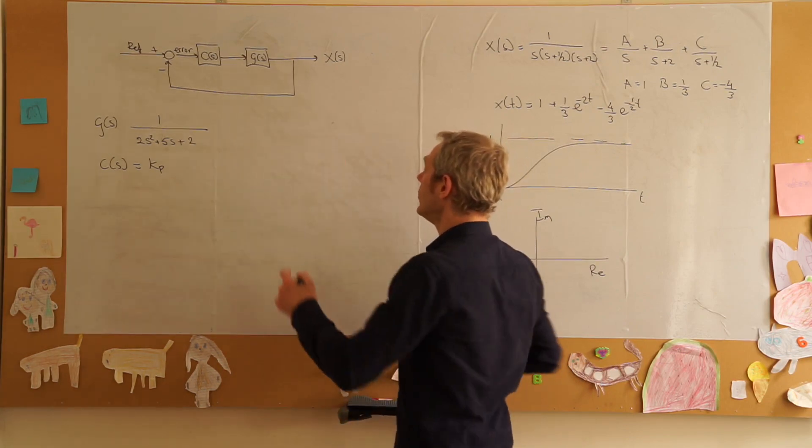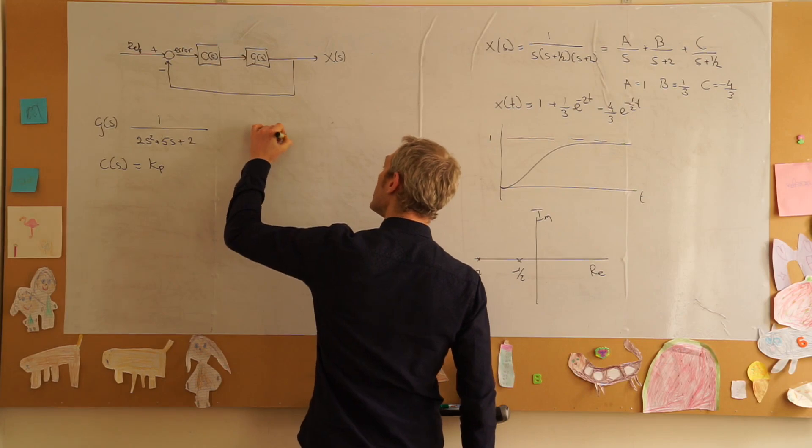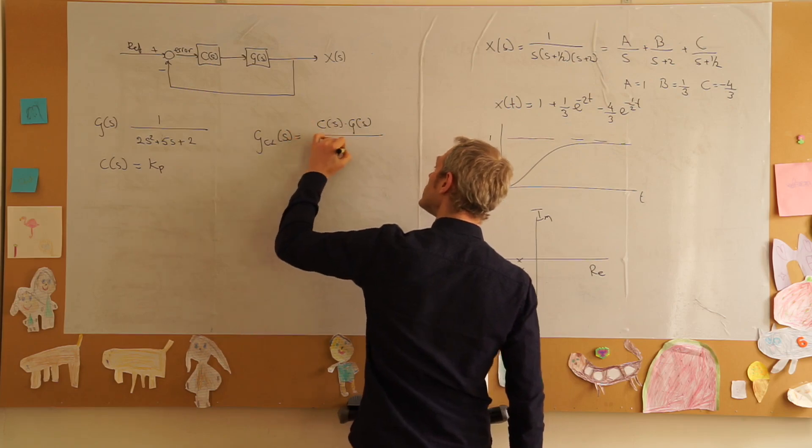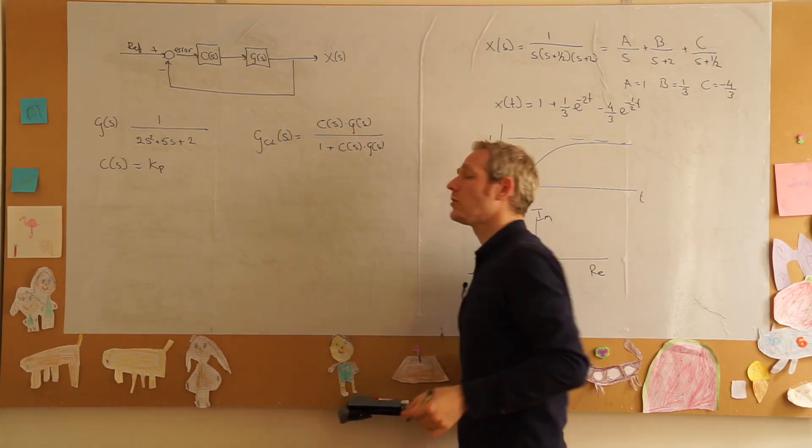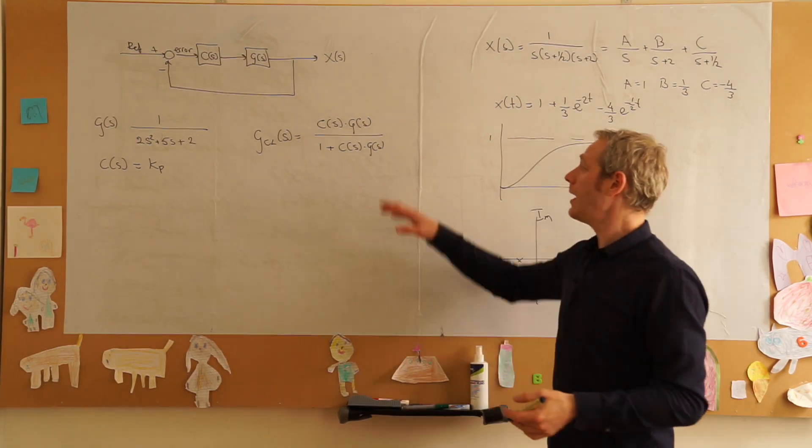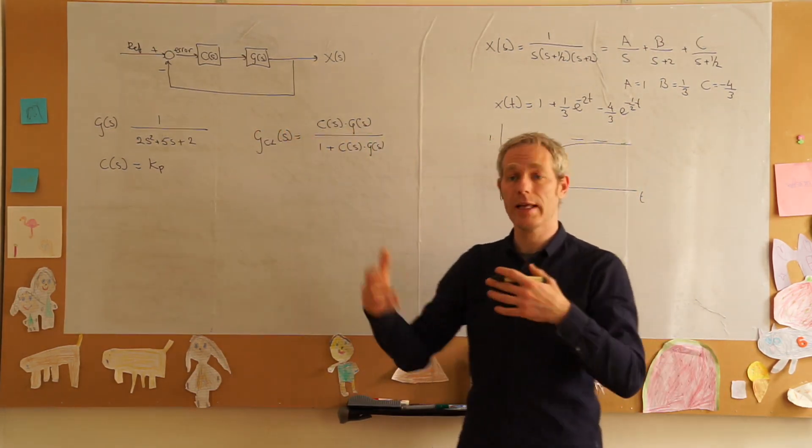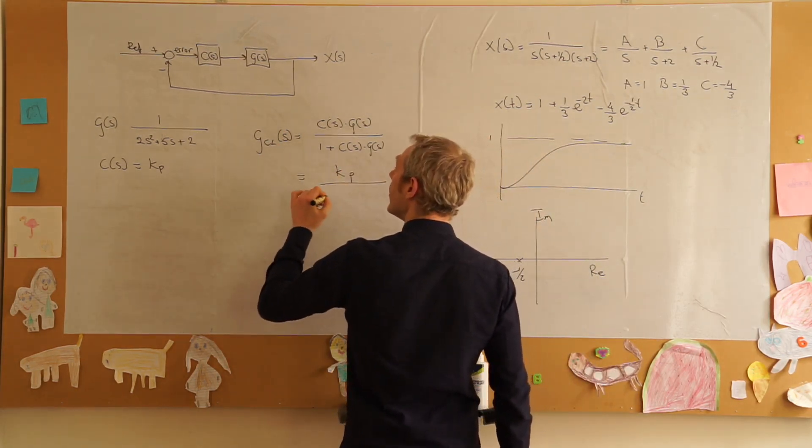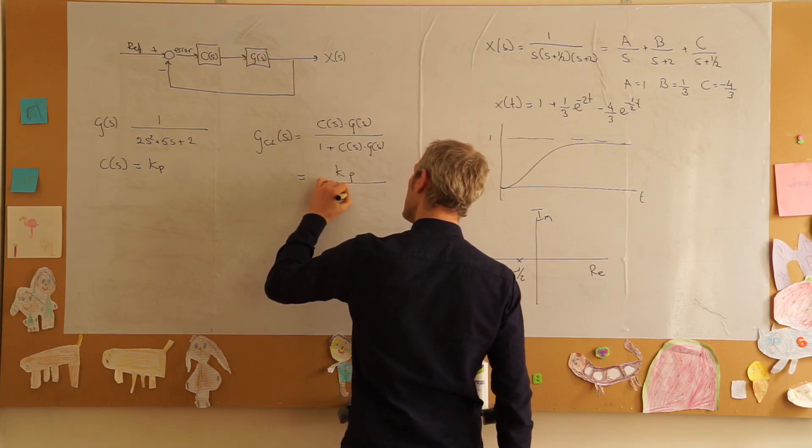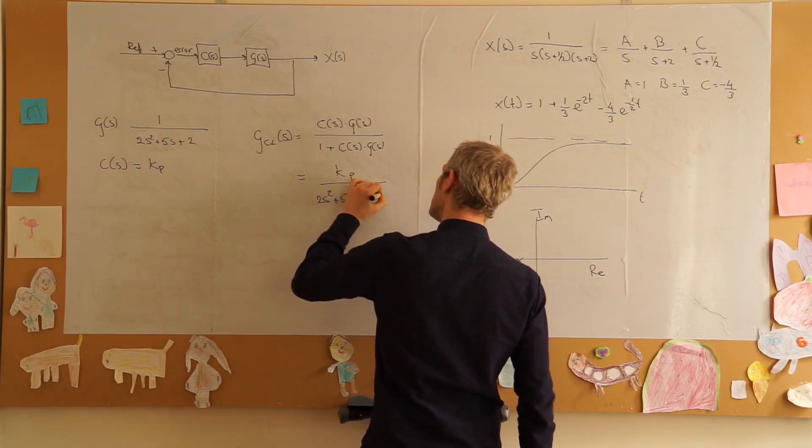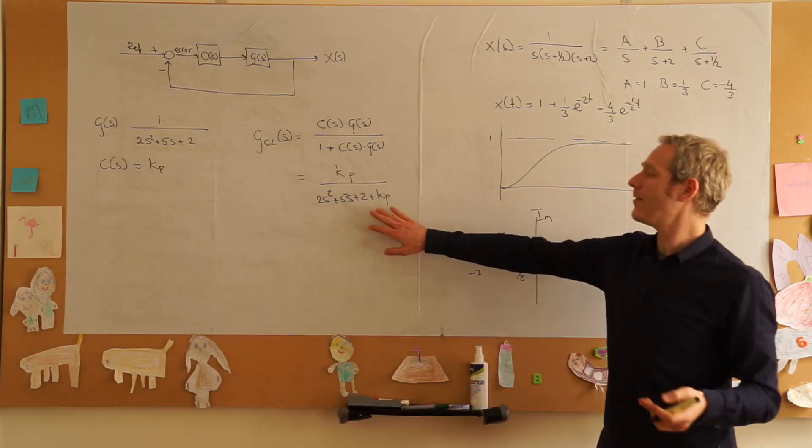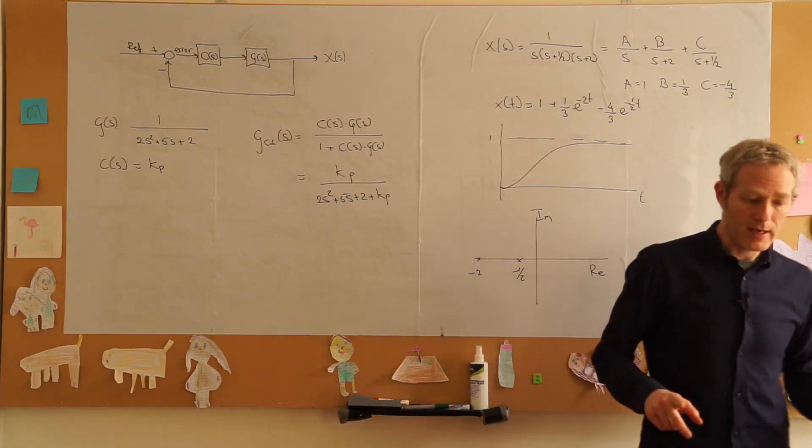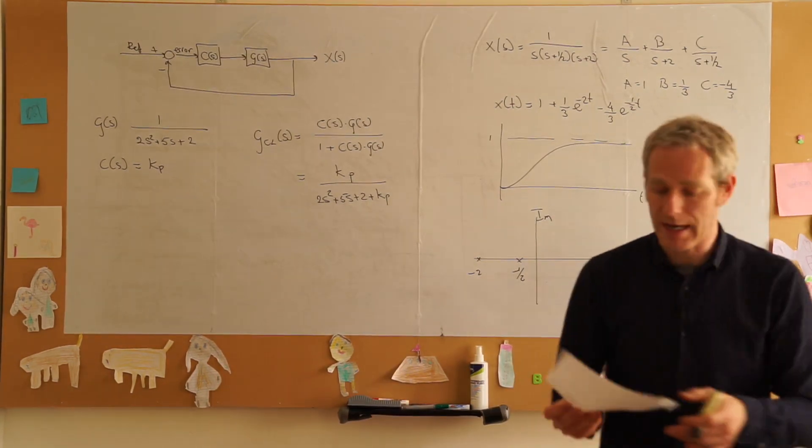If we have our control loop we know that the closed loop transfer function is equal to c s times g s over one plus c s times g s. We can write that as k p over two s squared plus five s plus two plus k p. What we want to do is see the effect of different values of k p on the location of these poles.